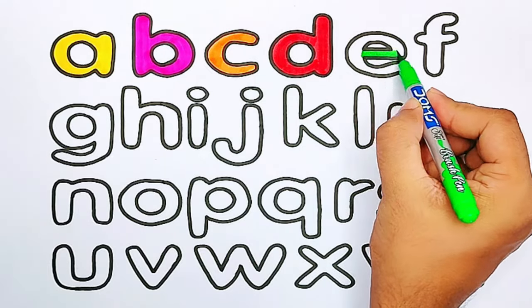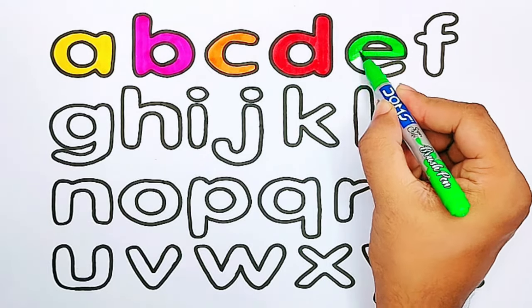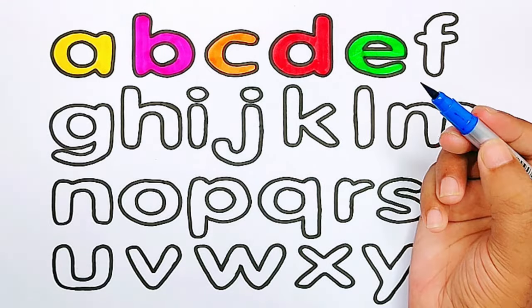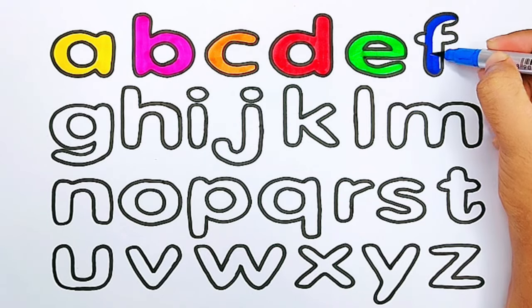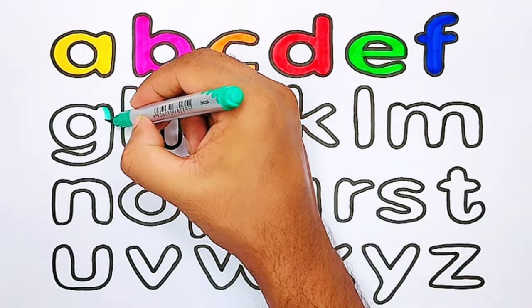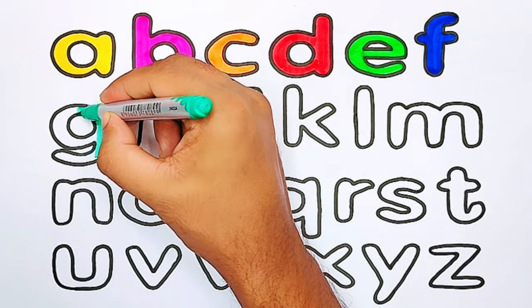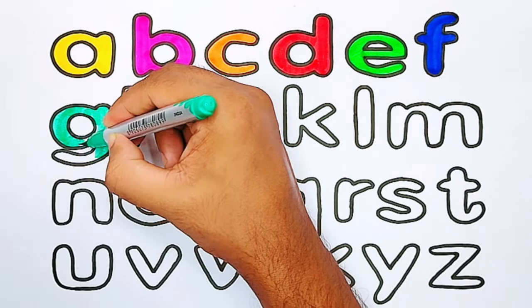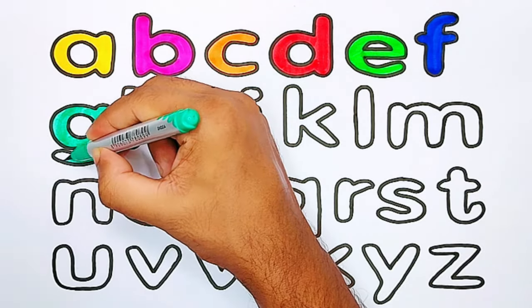Green color. E, E for eagle. Blue color. F, F for fan. Green color. G, G for garden. G for garden.